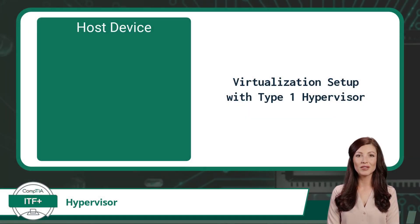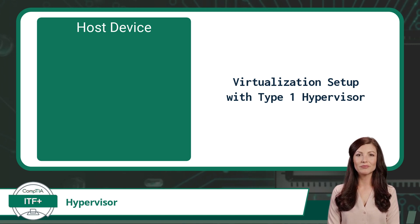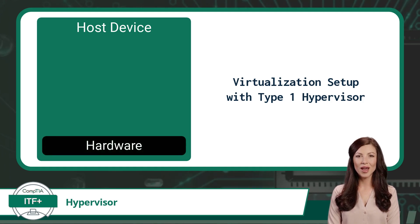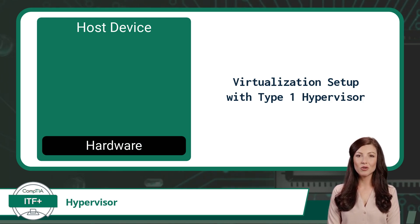With virtualization, there are two common methods of deployment. The first virtualization setup starts with the computing device without an operating system installed. This will be represented by the empty green box behind me. Within this computing device, we will have hardware — items like the CPU, RAM, and storage drives. Inside of a virtualized environment, this computing device is often called the host device.